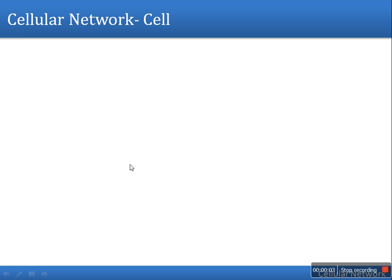Hello everyone, in this video I will explain why the shape of a cell in a cellular network is taken as hexagonal, why not square, why not circle. A cell in a cellular network is the coverage area of a base station.